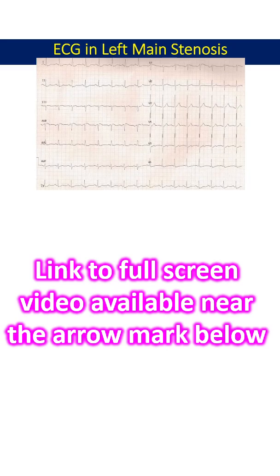A similar ECG pattern can also occur in severe proximal triple vessel disease. The previous ECG is shown here for comparison, which shows minimal changes, with minimal ST segment elevation in AVR as well. This highlights the need for serial ECGs in acute coronary syndrome, as initial ECGs may be near normal even in those with severe disease.